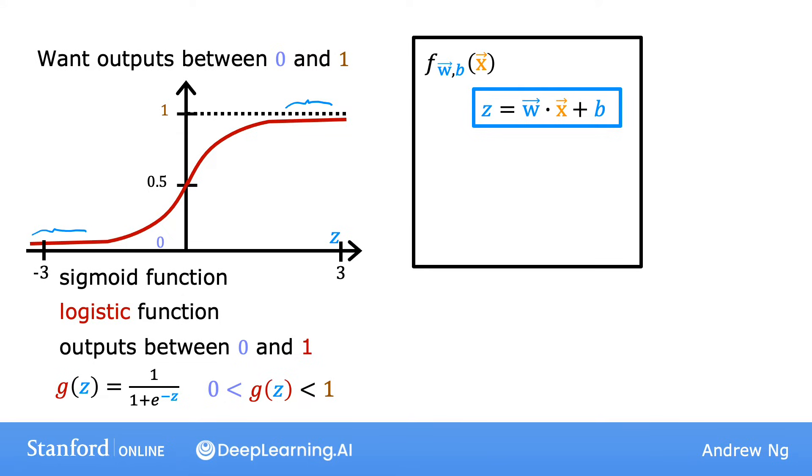The next step then is to take this value of z and pass it to the sigmoid function, also called the logistic function g. So now, g of z then outputs the value computed by this formula, 1 over 1 plus e to the negative z, that's going to be between 0 and 1.